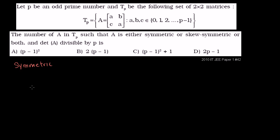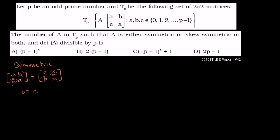Let's make sure we understand what symmetric and skew-symmetric mean. A matrix is symmetric if it equals its transpose. For our matrix A = [[a, b], [c, a]], the transpose is formed by swapping rows and columns: the first row a, b becomes the first column, and the second row c, a becomes the second column. This essentially means that b must equal c for any symmetric matrix.